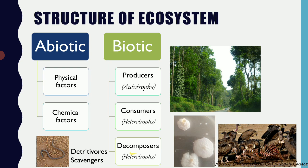The third type of biotic component are decomposers. Decomposers are also heterotrophs because they cannot prepare their own food — they have to absorb nutrition from elsewhere. The key difference between consumers and decomposers is that decomposers are capable of absorbing nutrition from even dead organisms — dead producers or dead consumers, dead plants or dead animals. They are called decomposers for this reason, though they are heterotrophs, they differ from consumers.